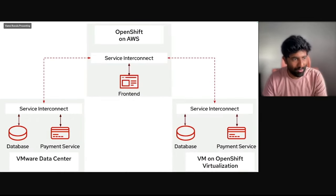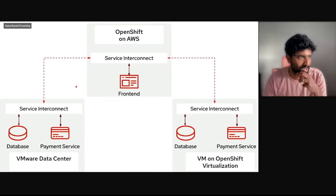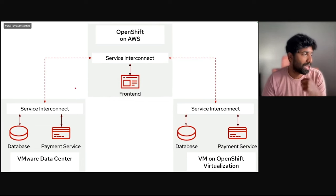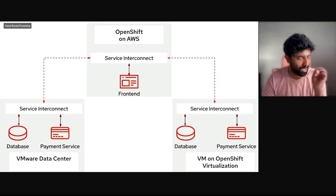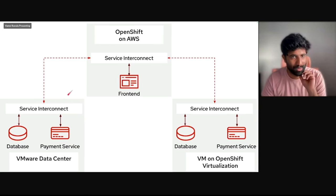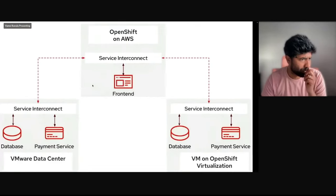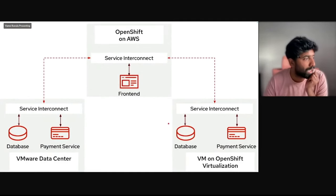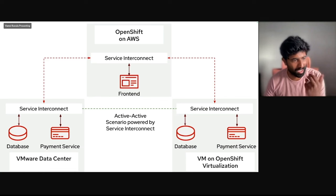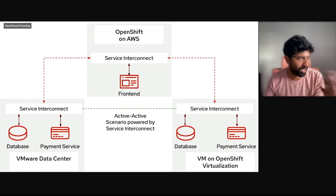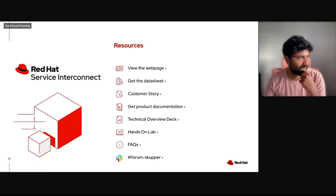We created a VM, brought it up with all services using the same names as the original services, and then slowly took down the VMs on VMware, seamlessly switching over to the VM on OpenShift Virtualization. It also powers an active-active scenario where you have the VMware data center and the VM on OpenShift — it automatically load balances between both. Not just failover, but also load balancing if you want to keep both running for some time.